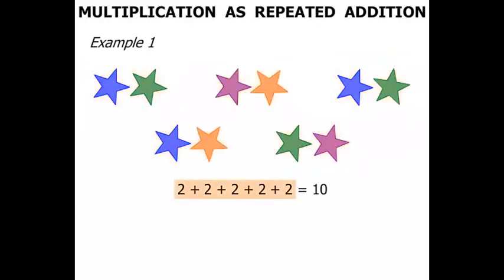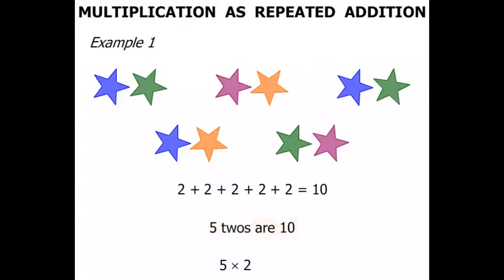Now how many 2's have we got there? We've got 5. So we can say that 5 2's are 10. Using multiplication we can say 5 times 2, and it equals 10.